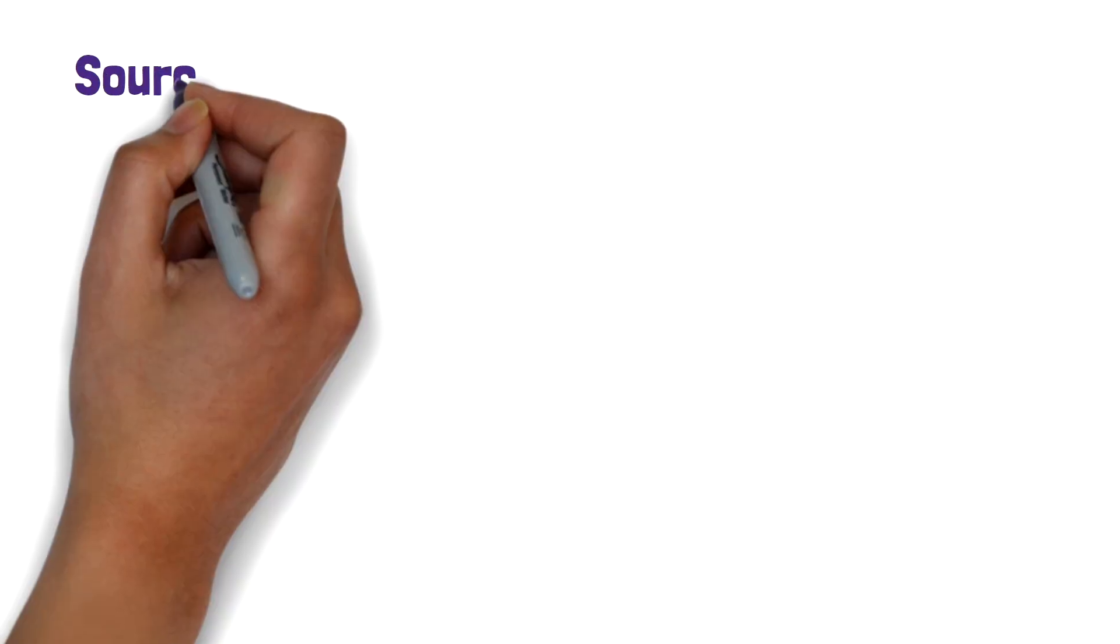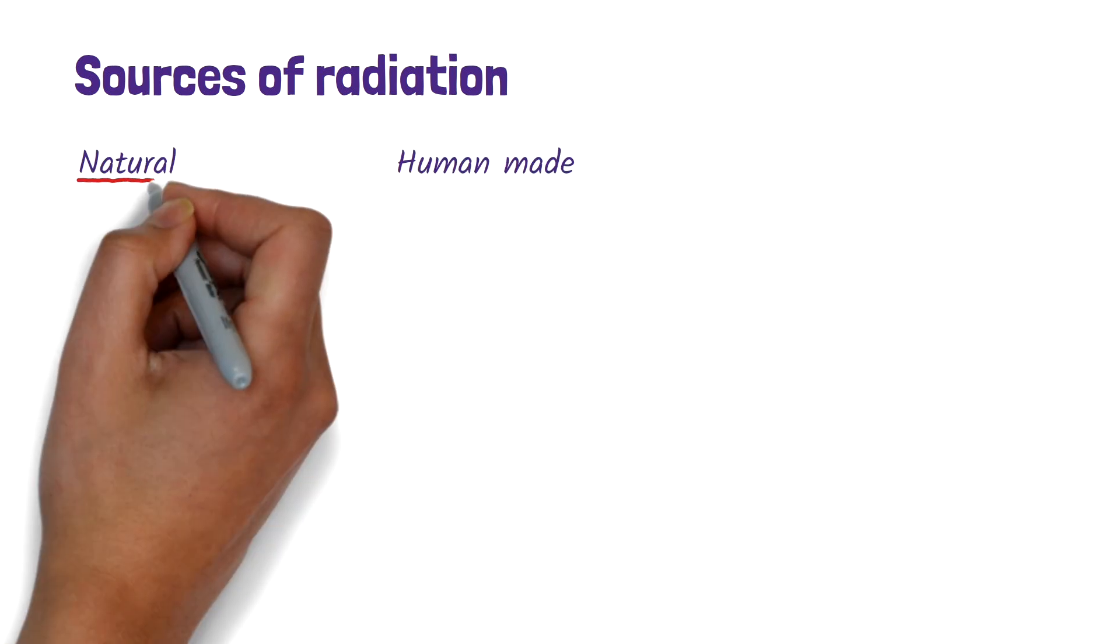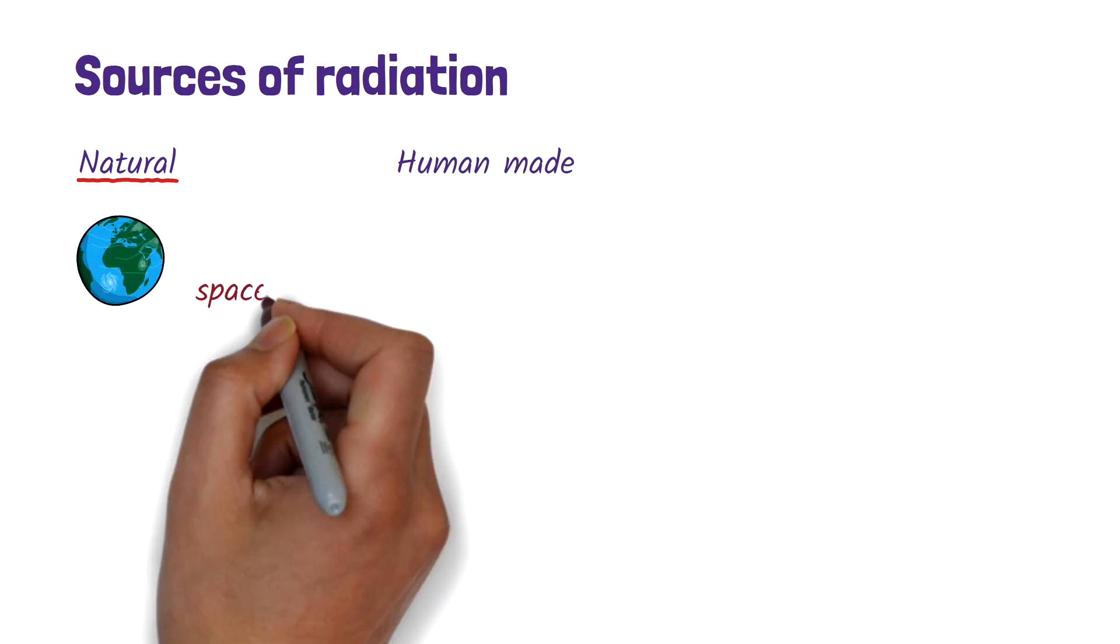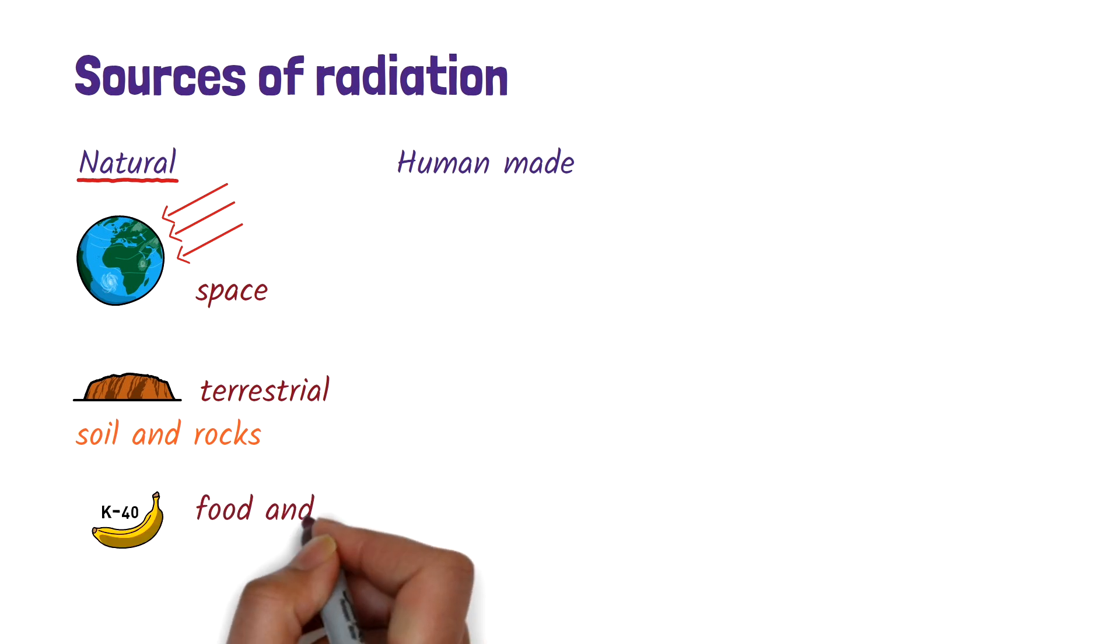So, where does radiation come from? Radiation is all around us, coming from both natural and human-made sources. Natural sources include radiation from space, known as cosmic rays, and radiation from the Earth itself, known as terrestrial radiation. The soil and rocks around us contain radioactive elements. Even the food we eat and the water we drink can contain tiny amounts of radioactive substances.